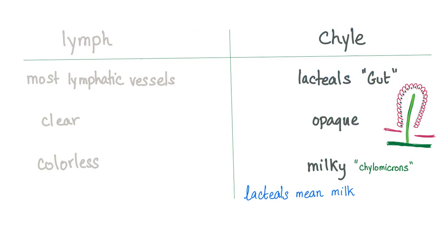Quick comparison between lymph and chyle: lymph is found in most lymphatic vessels, and it is clear and colorless. Chyle is found only in lacteals in your gut — it is opaque and contains milky fluid because lacteals mean milk, like lactose and lactase. Why milky? Due to the presence of chylomicrons.